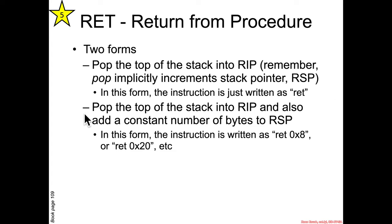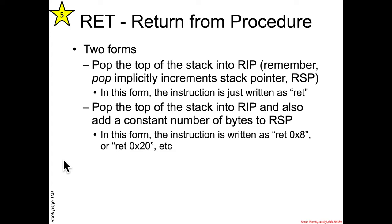There's also another form of RET that you'll see less frequently, where it does the same thing but you can also specify some number of bytes to be added to RSP. So instead of just popping one thing off the top of the stack, it pops it into RIP and then adds an extra number of bytes — say 8 or 20 bytes — to RSP. This is used by Windows APIs, so if you ever start disassembling Windows APIs, you'll potentially see this type of instruction.